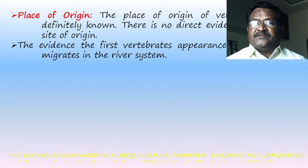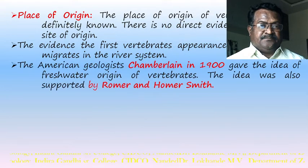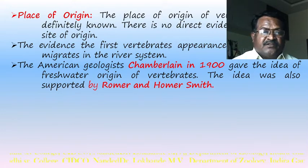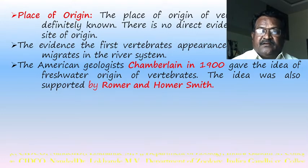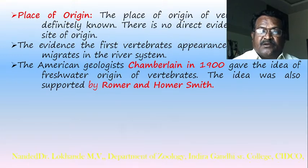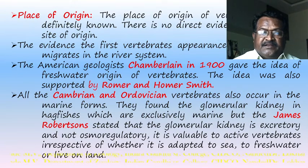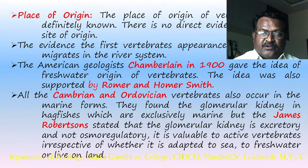Evidence suggests the first vertebrates appeared in the sea and then migrated into river systems. The American geologist Chamberlain in 1900 proposed the freshwater origin of vertebrates, a view supported by Romer and Homer Smith. However, Cambrian and Ordovician vertebrates also occur in marine forms, and James and Robertson argued that the glomerular kidney is excretory and valuable to vertebrates irrespective of whether they live in sea, freshwater, or on land.